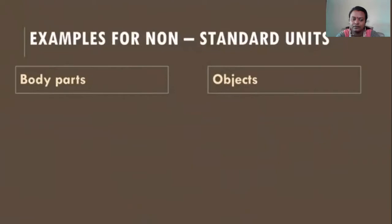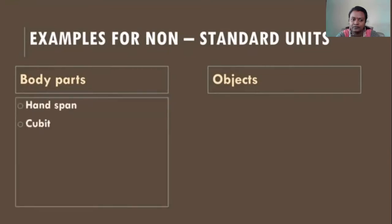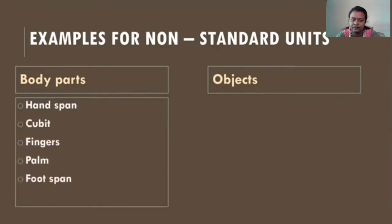Examples of non-standard units include body parts and objects. With body parts we have handspan, cubit, fingers, palm, and foot span. With objects we have pencil, cup, stick, and clothes. Now let us see about these examples one by one in detail.